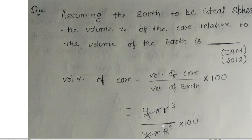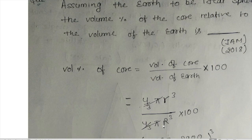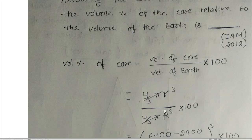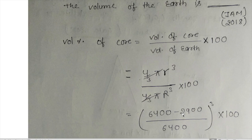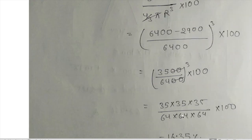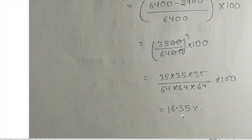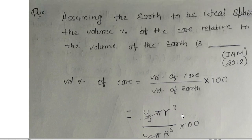Assuming the Earth to be an ideal sphere, find the volume percentage of the core relative to the volume of the Earth. We know the volume of a sphere is (4/3)πr³. The radius of the Earth is 6400 km. For the core, we subtract the depth of the mantle from 6400 to get the core radius. Putting the values of volume of core divided by volume of Earth times 100 gives 16.35 percent.